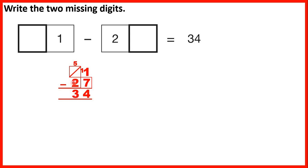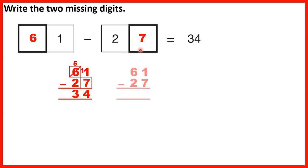But what was this digit originally before we exchanged? When we exchange it's always 1 less, so this digit must have been a 6, because 1 less is 5, and that means we can put 1 in front of our ones digit. So the tens digit is 6 and the missing ones digit is 7. We can check: 61 minus 27 is 34.